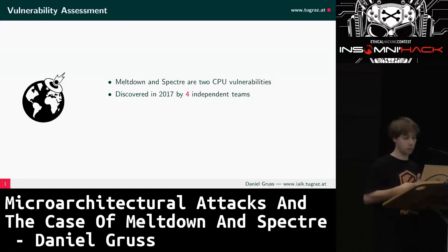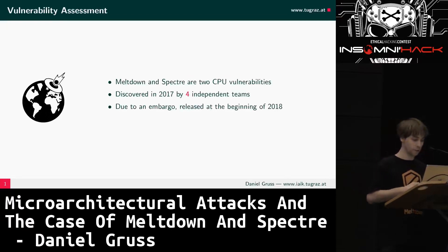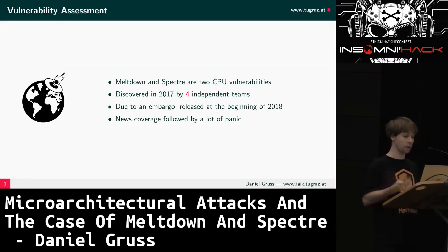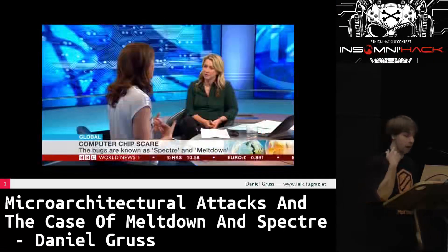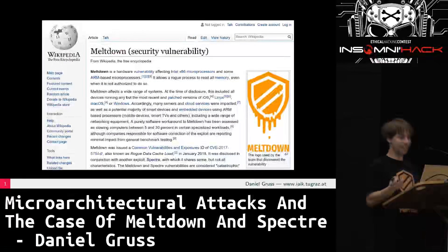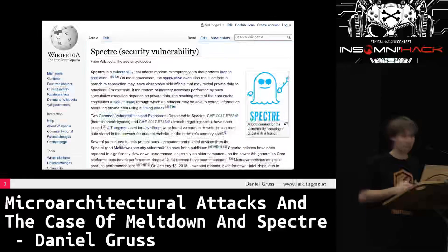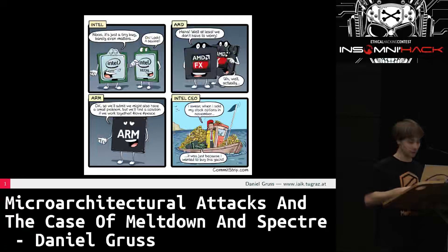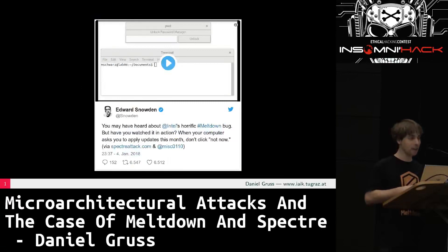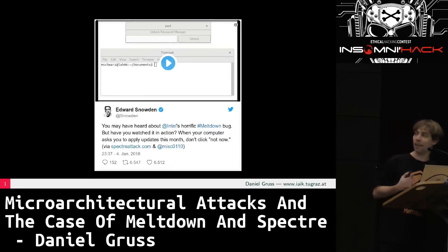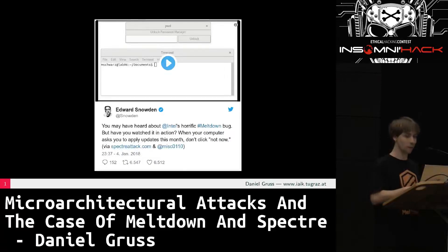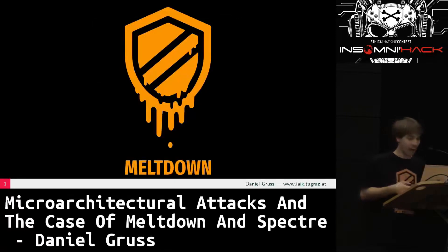During the responsible disclosure, Intel got us connected, and that's how things evolved. There will be two papers with authors from all four teams. Due to an embargo, we only released them in early 2018, and there was a lot of news coverage — Fox News, CNN, BBC, CNBC. There's a Wikipedia page, which I really like. We also liked the xkcd comic. We also had a tweet from Edward Snowden.